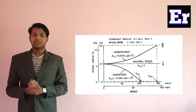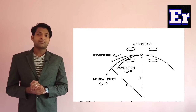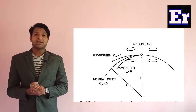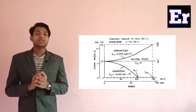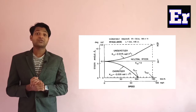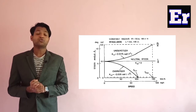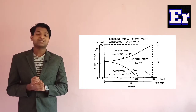For the understeer case, the vehicle will not follow the intended path because of the slip angles. The front slip angle will be greater than the rear slip angle, so K_us has a positive value. To take a particular turn of radius R, you have to steer more. As shown in the graph, there is a characteristic speed at which you need to steer twice as much compared to the neutral steer case in order to take a constant-radius turn.